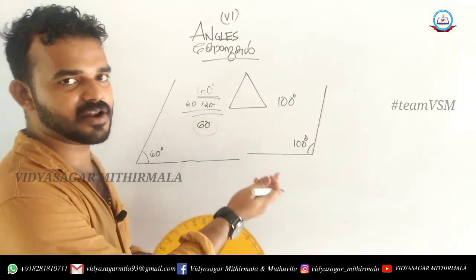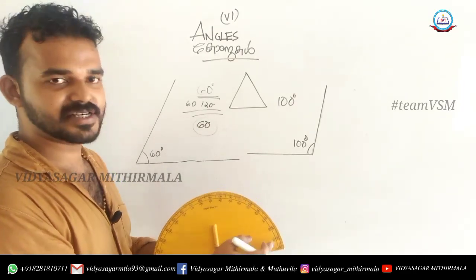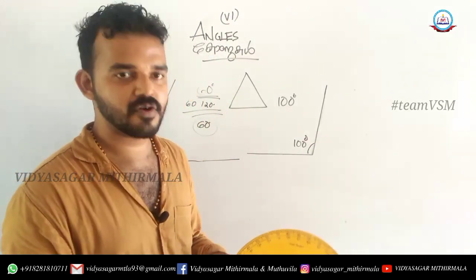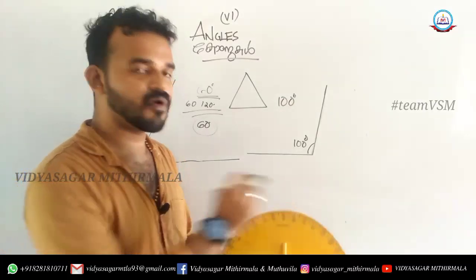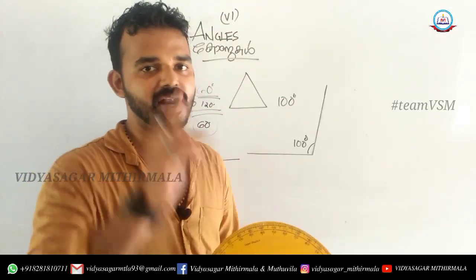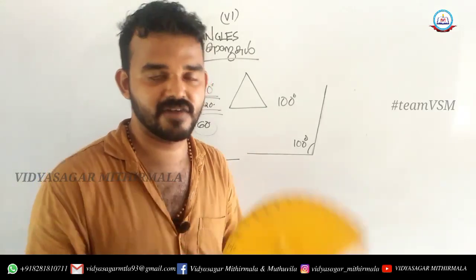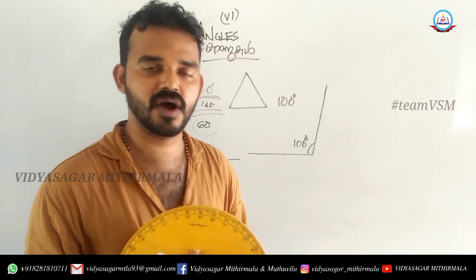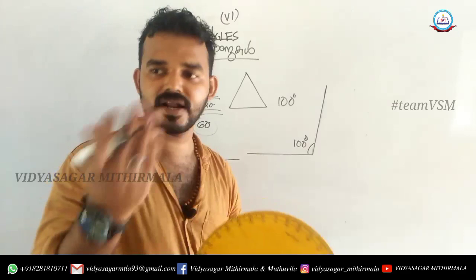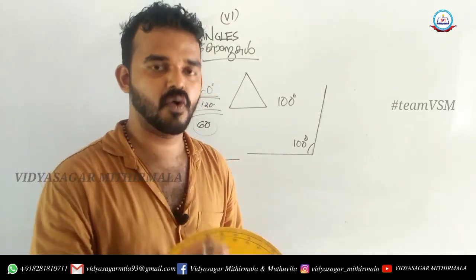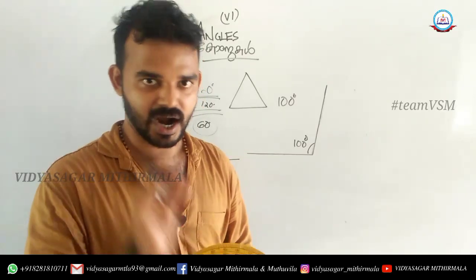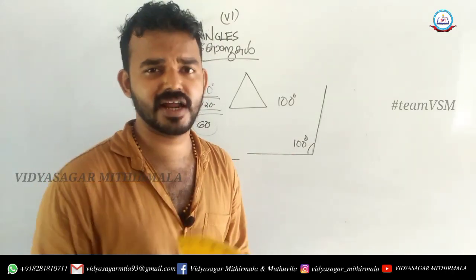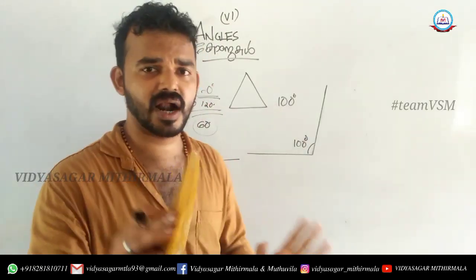So we have angle A-0, and this is a 70-degree angle. Then A-0 is the angle. There are 2 different factors. In this picture, the bottom is clearly visible.